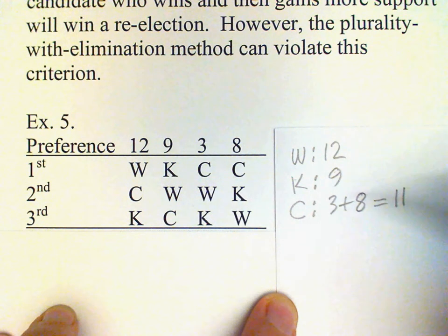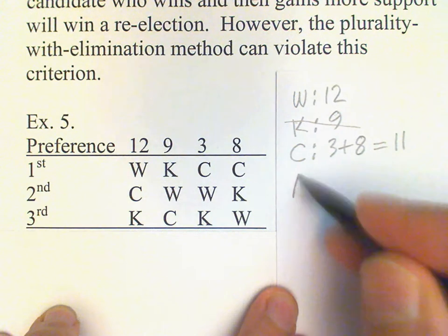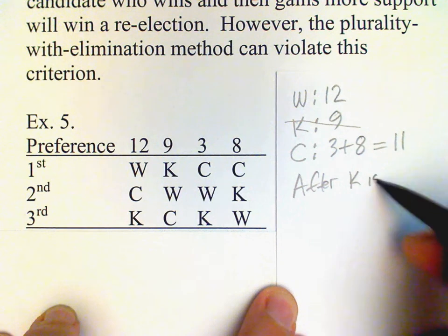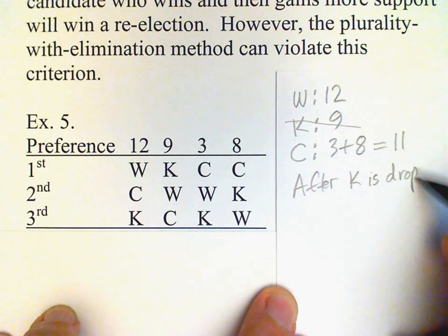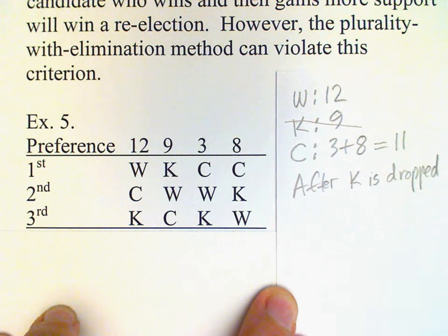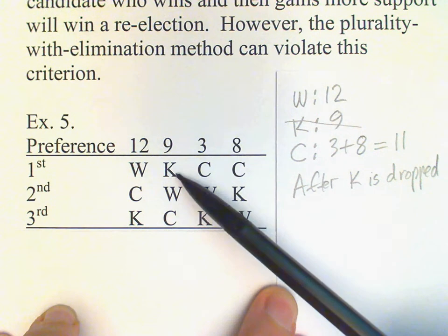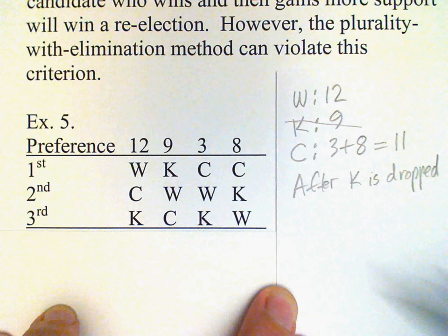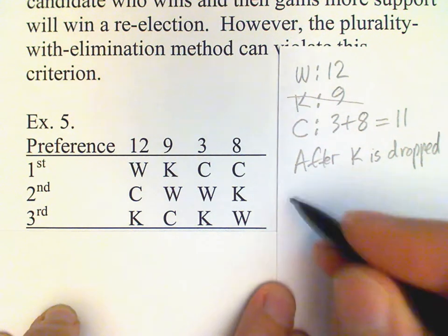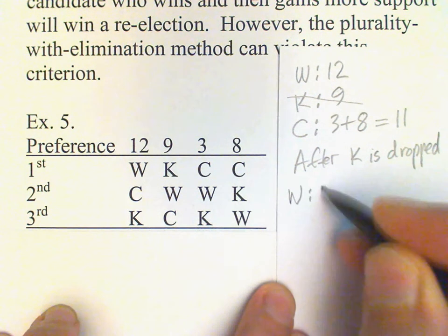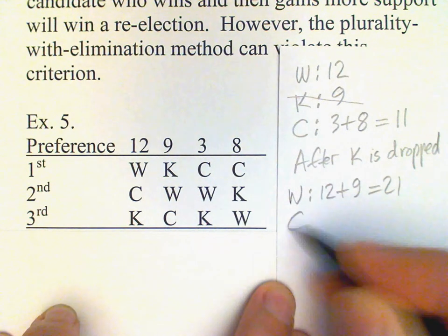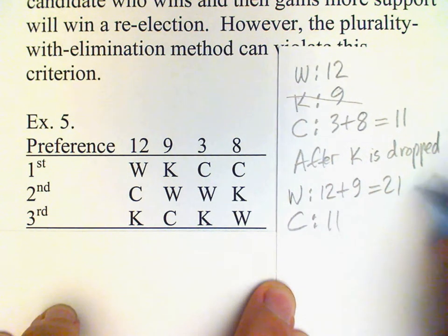No candidate has a majority under plurality with elimination, so K is dropped. Those 9 votes that were going to K now go to W. So we have W getting 12 plus 9, or 21, and C still has 11. W is the winner.